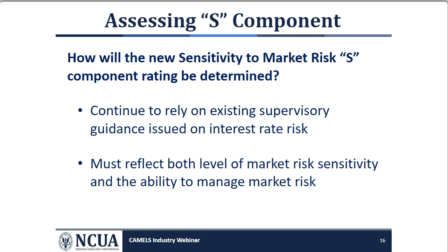Credit unions with low risk but inadequate market risk management may be subject to unfavorable S ratings. Conversely, institutions with moderate levels of market risk and the demonstrated ability to ensure that market risk is and will remain well controlled may receive a more favorable S component rating.